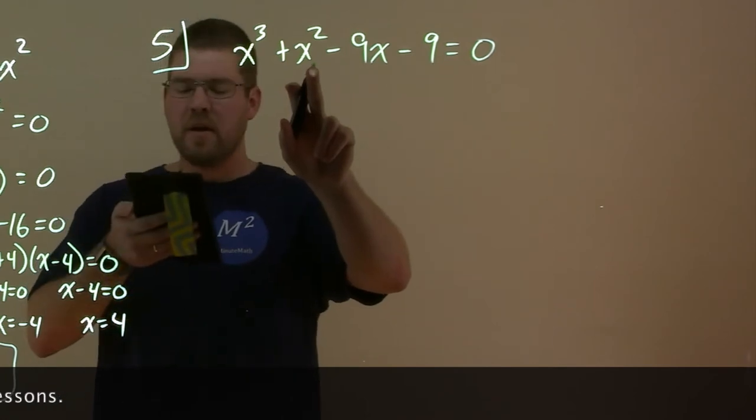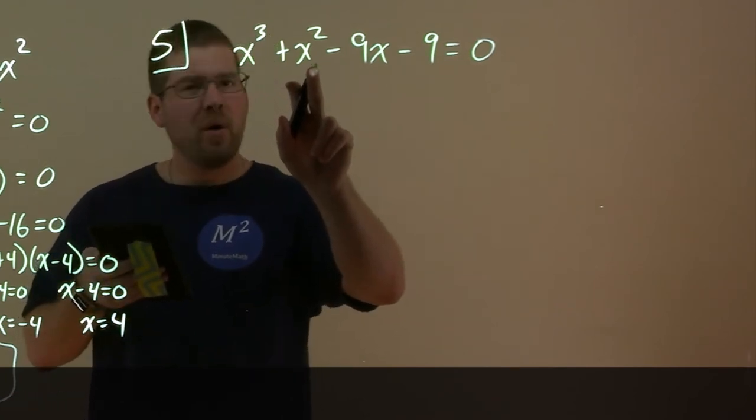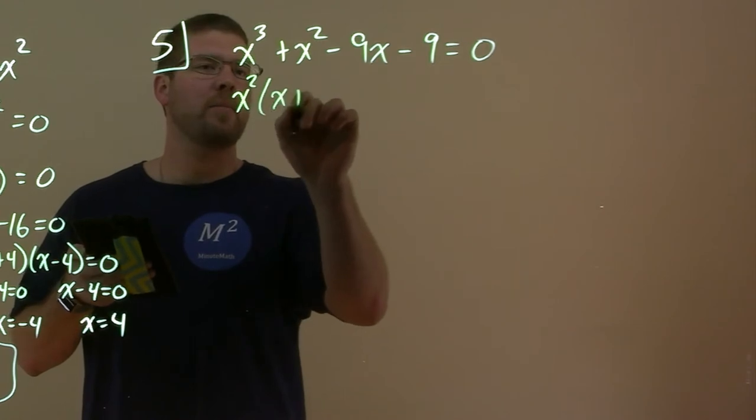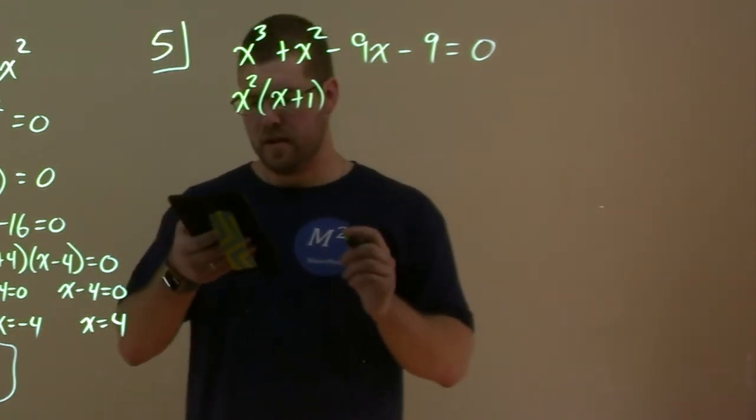We see x^3 and x^2. What's a common thing we see in both of those? Oh, x^2. So we have x^2 here, (x + 1). Fantastic. Now let's do it again.